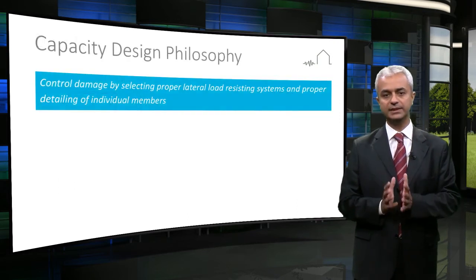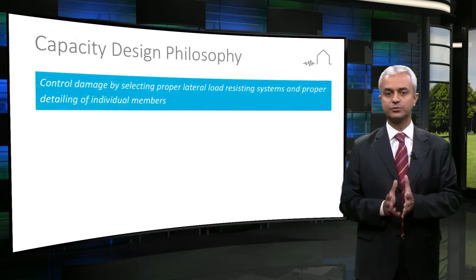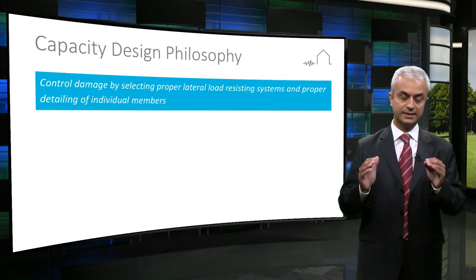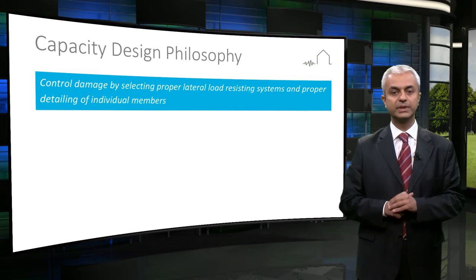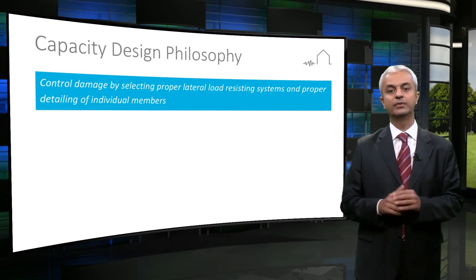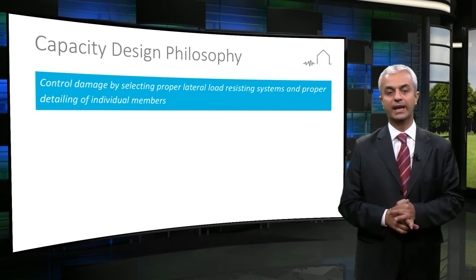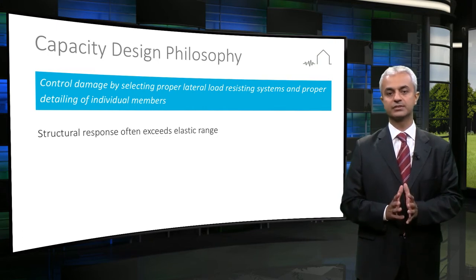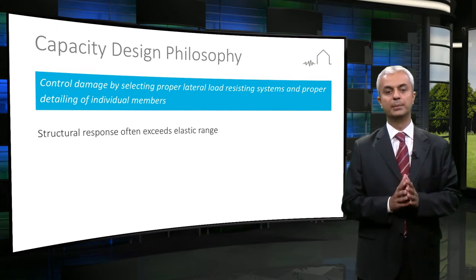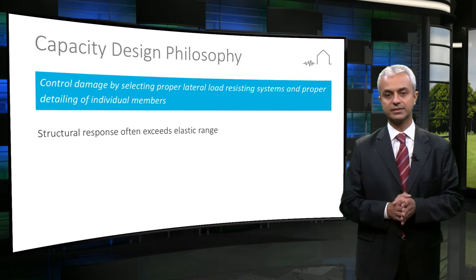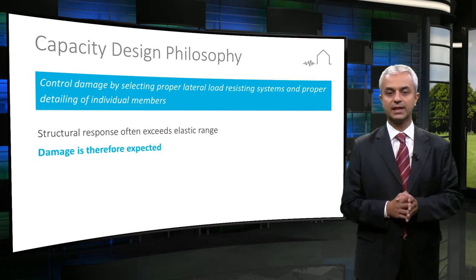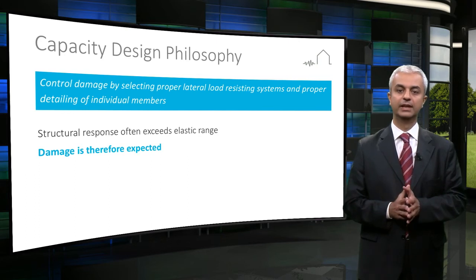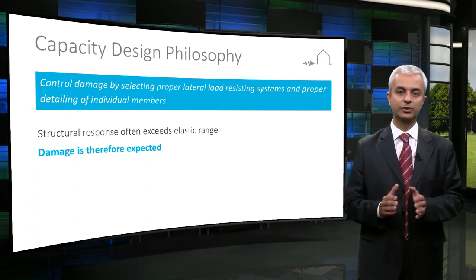The main goal of seismic design is to control this damage by selecting a proper lateral load-resisting system and proper detailing of individual members. Excessive inelastic deformations should be kept in certain locations of the structure, called plastic hinges. These locations are designed with proper detailing to ensure ductile behavior and to avoid brittle failure.